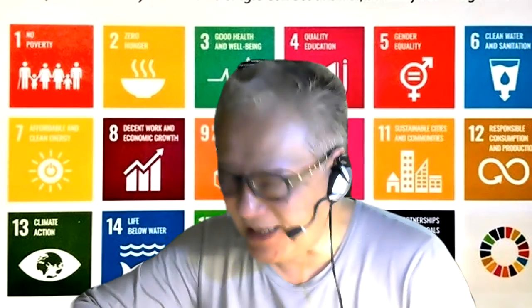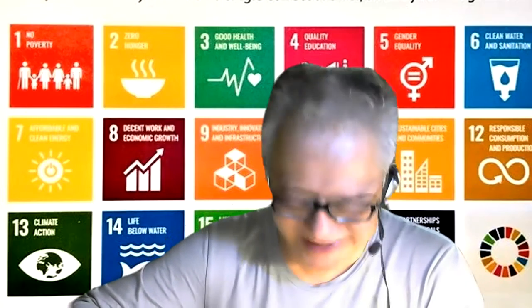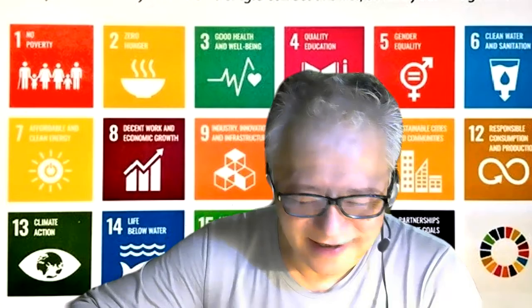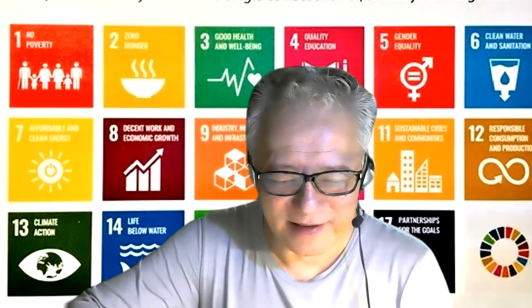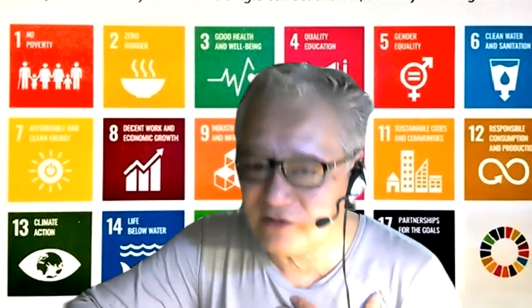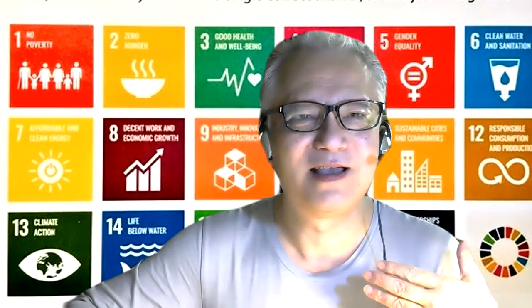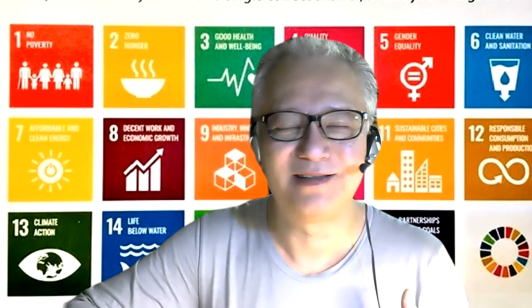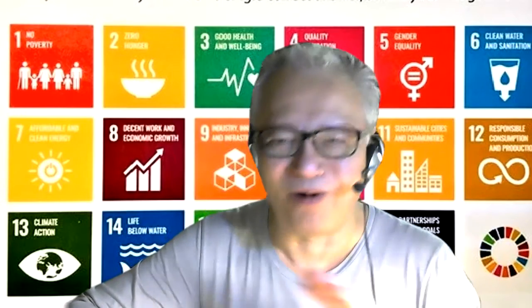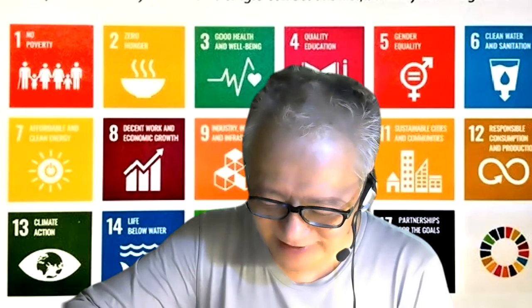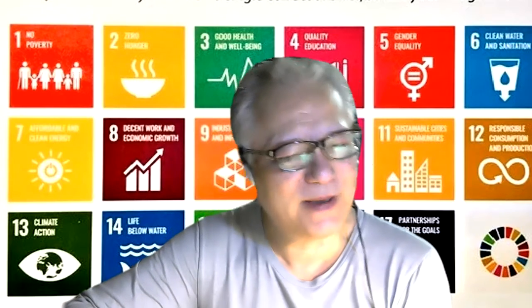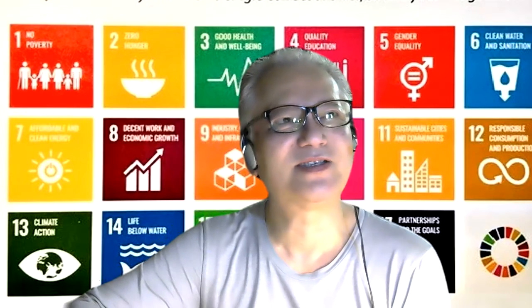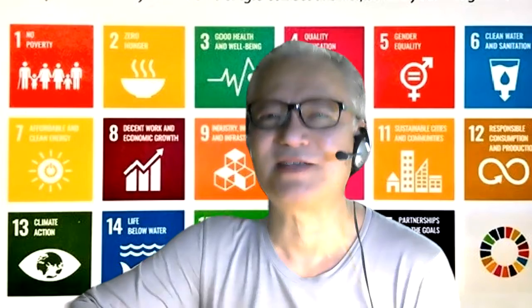Sustainable Development Goals. And there are 17 icons, and each one of them represents something that you can relate to — to make the Earth a better place for not only human beings, but also all other living creatures. It's been talked about, of course — the United Nations started about seven years ago. I believe it was 2015.